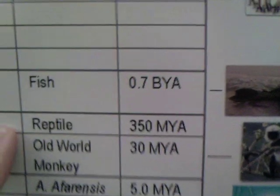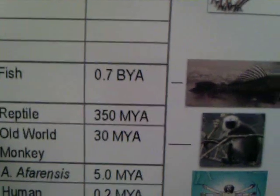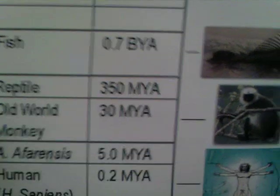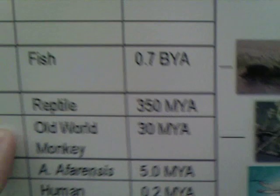Walking fish slowly evolved into reptiles. Reptiles slowly evolved into old-world monkeys. Old-world monkeys, by 30 million years ago, would have been defined as a 24-element molecular structure, consisting of carbon on down to vanadium.